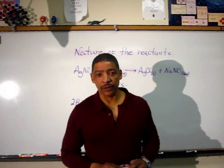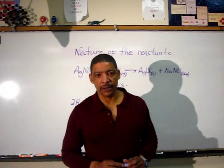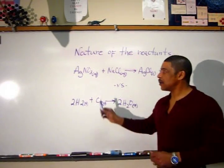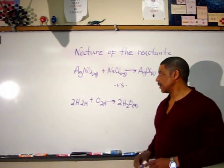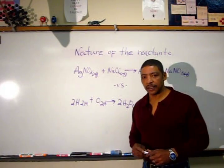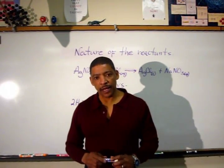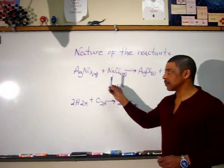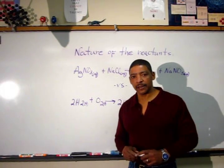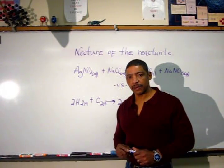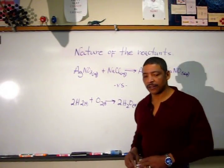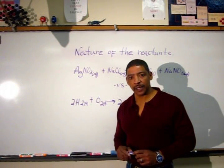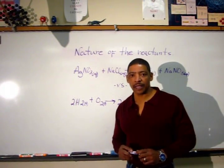The nature of the reacting particles is very important in determining the rate of a chemical reaction. For example, when aqueous silver nitrate is mixed with aqueous sodium chloride, the reaction will proceed at a fast rate. This is due to the fact that the reacting particles are already separated into their respective ions. Therefore, when these two solutions are mixed, the reaction will proceed at a fast rate, since the ions are already separated and may easily interact to form products.